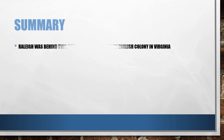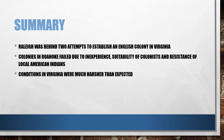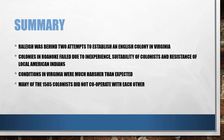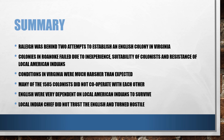To summarize: Raleigh was behind two attempts to establish an English colony in Virginia. The colonies at Roanoke failed due to the inexperience and unsuitability of colonists and resistance from local American Indians. Conditions in Virginia were much harsher than expected — colonists became ill and couldn't grow crops. Many of the 1585 colonists did not cooperate with each other, and the English became heavily dependent on the local American Indians to survive. The local chief ultimately did not trust the English and turned hostile. Like and subscribe for more revision videos before the 2023 exams.